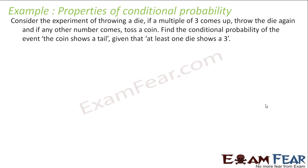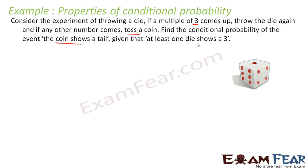The next question says: in an experiment of throwing a die, if the number that comes is a multiple of 3, the die is thrown again; if any other number comes, we toss a coin. Find the conditional probability of the coin showing a tail, given that at least one die shows 3. So I throw the die — I get a multiple of 3, that is 3 and 6, or I get a non-multiple of 3, that is 1, 2, 4, 5.